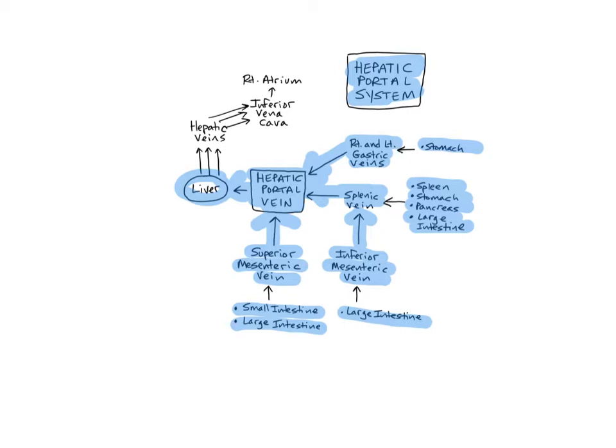After the liver performs its various duties, several hepatic veins drain the processed blood out of the liver and deliver it into the inferior vena cava, where it is then combined with the rest of the systemic venous blood and transported into the right atrium of the heart.